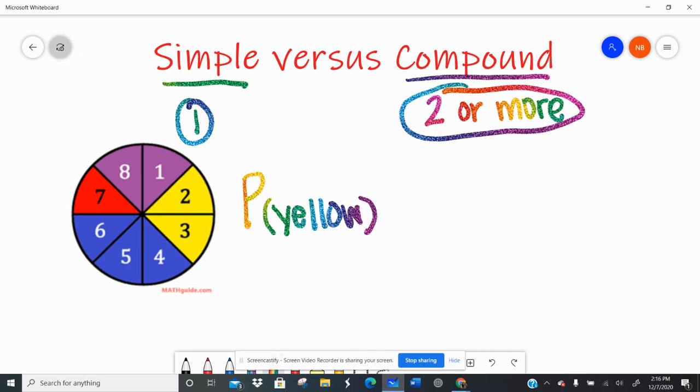The probability of yellow. Well, if I look at that spinner, you notice that all of those are equal size pieces, so that's important with probability. They're all kind of the same size and shape. There's eight total pieces and two of them are yellow. So the probability of landing on yellow is two out of eight. If I spin eight times, I should land on yellow twice because two of the eight pieces are yellow.